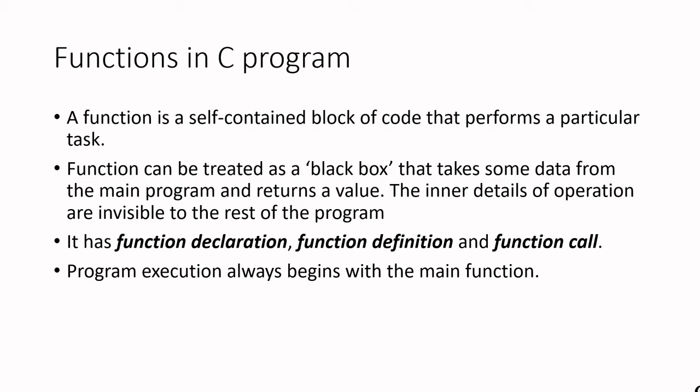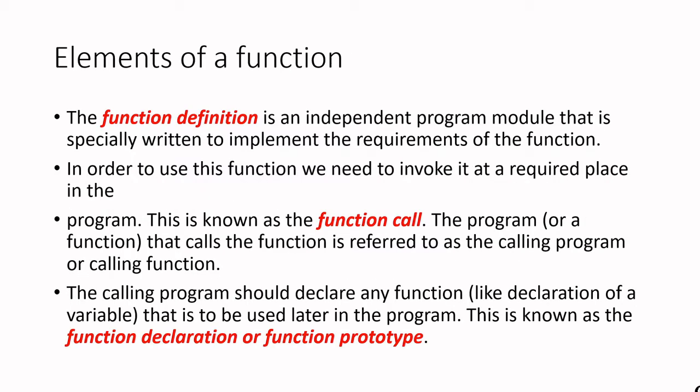A function has three parts: function declaration, function definition, and function call. Normally, program execution always begins with the main function. Function definition is an independent program module specially written to implement the requirements of the function. For example, finding the sum of two numbers — what to do will be written inside the function definition.